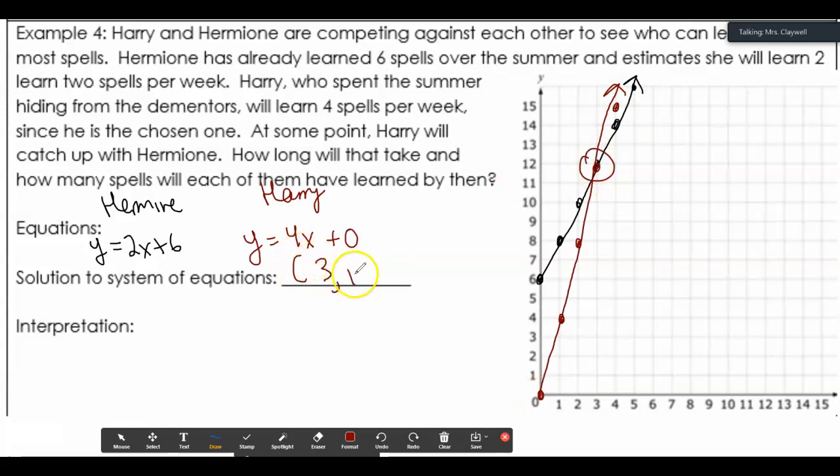They intersect at 3, 12. So what this tells us is, after 3 weeks, both will know 12 spells.